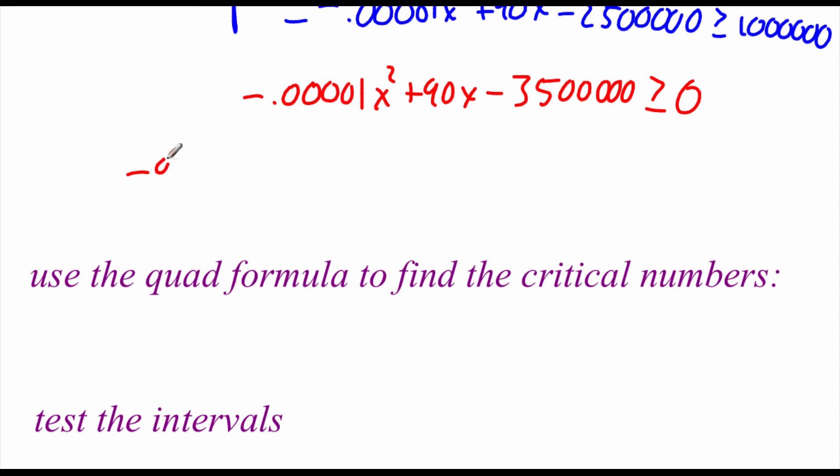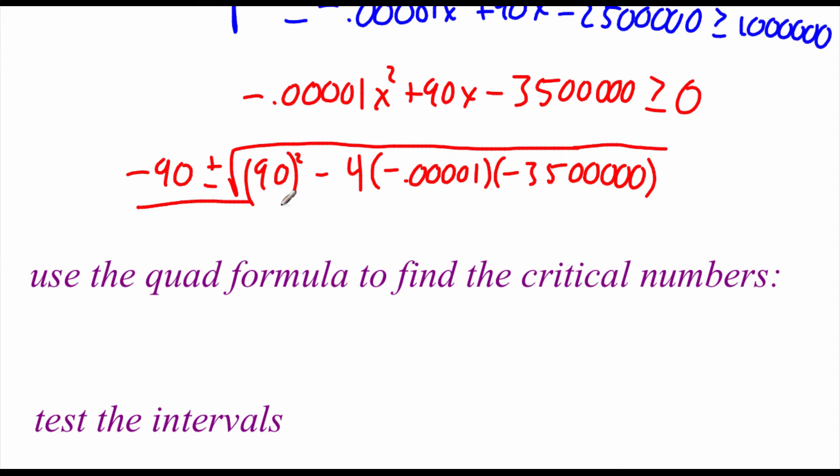So we're going to go negative B plus or minus the square root of B squared minus 4 times A, which is negative .00001, times C, which is negative .00001, all over 2 times that A value of negative .00001.